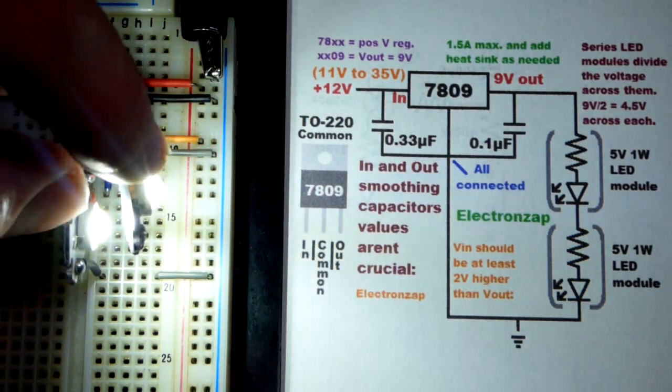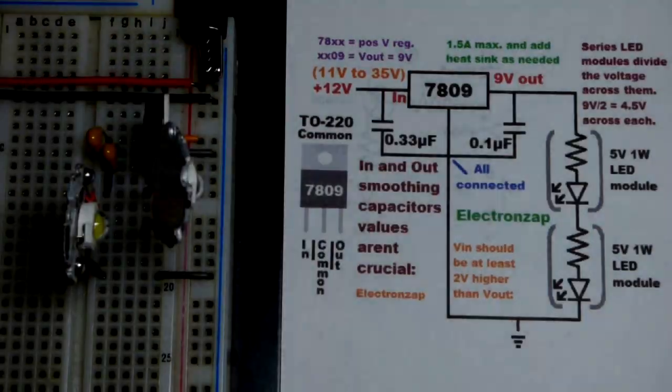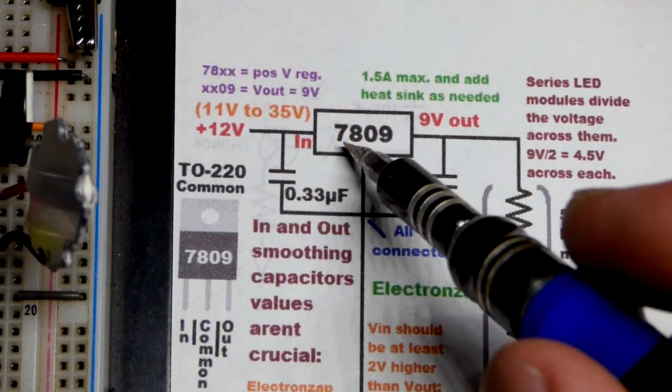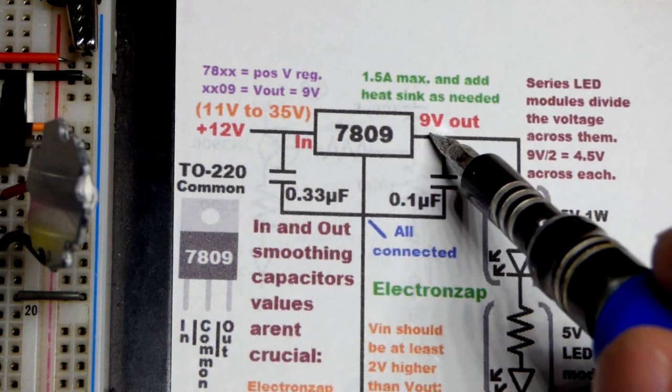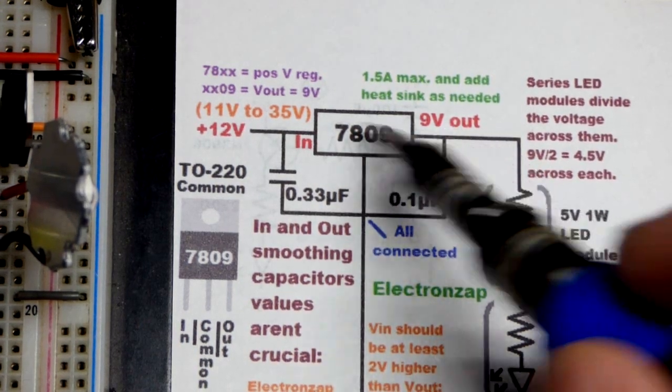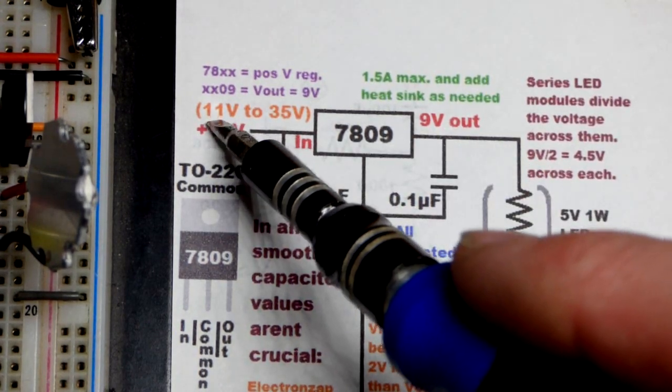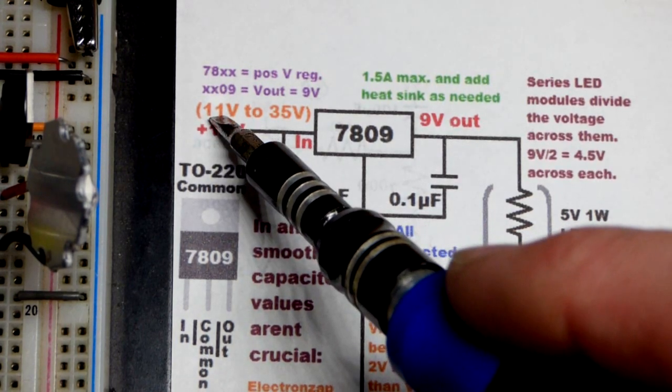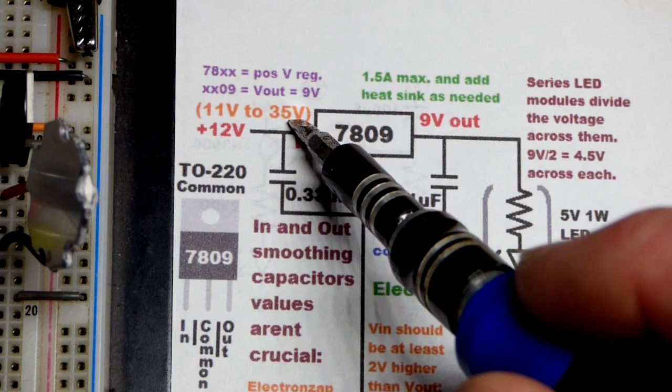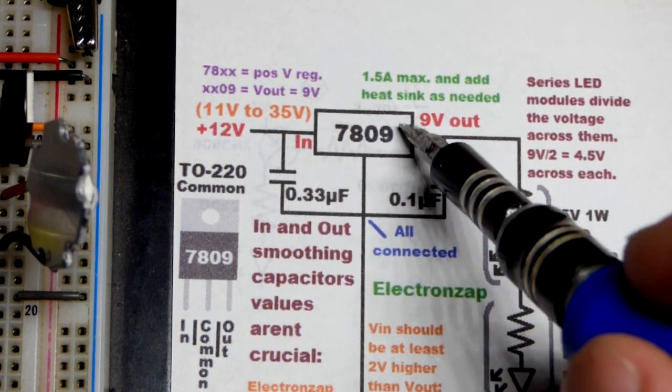They're really bright. This can handle a lot of power. When it comes to the 7800 series integrated circuits, you want whatever your output voltage is, you want the supply voltage to be at least two volts higher. We got three volts in this circuit but 11 will be about the minimum you want. You can go up to 35 volts with these integrated circuits.